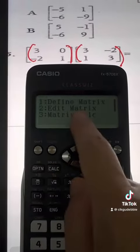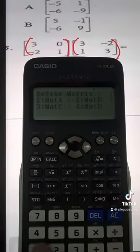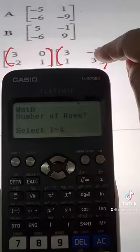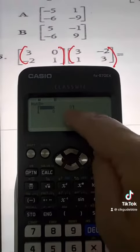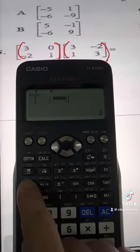Press OPTN for the option. Define matrix again, select number 1, and choose number 2 for matrix B. The second bracket is also 2 rows and 2 columns. Insert the numbers: 3, -2, 1, and 3.